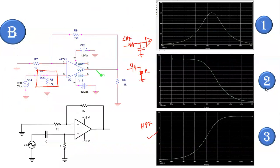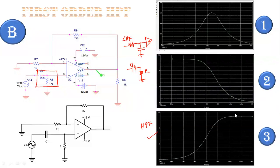Now, what about the high pass filter? For a high pass filter, we give the input through a capacitor and resistor combination. In a high pass filter configuration, the capacitor is at the input position and the resistor is towards ground. Through that RC combination of a high pass filter, we give the input to the non-inverting terminal of the op-amp. The response attenuates low frequencies and allows high frequencies. The third waveform shown is the output response for the high pass filter, which allows only high frequencies.